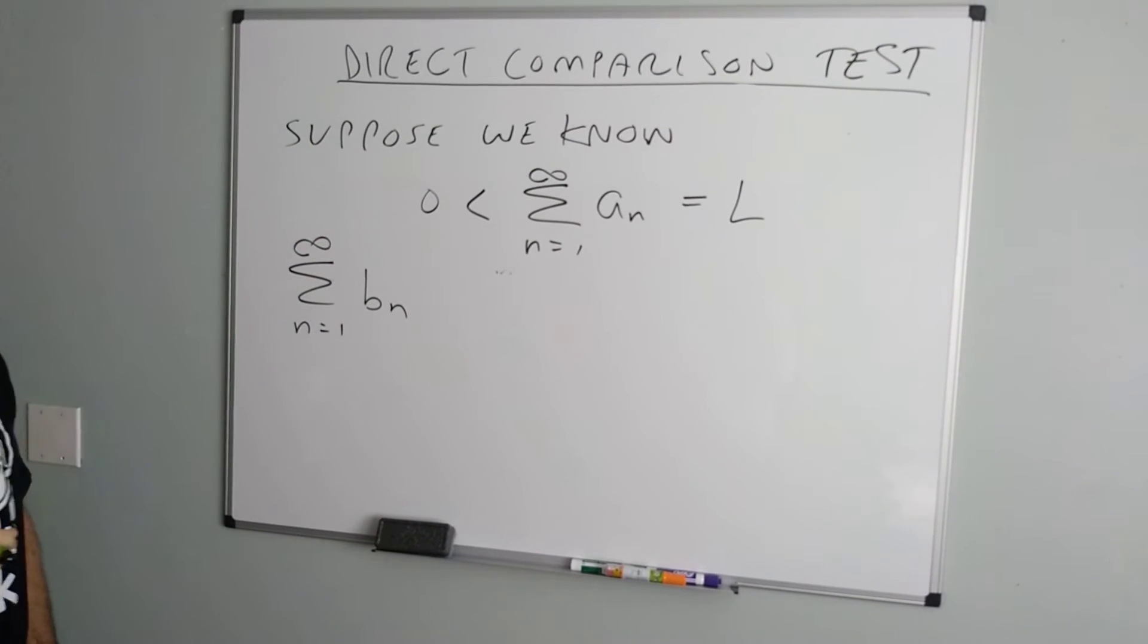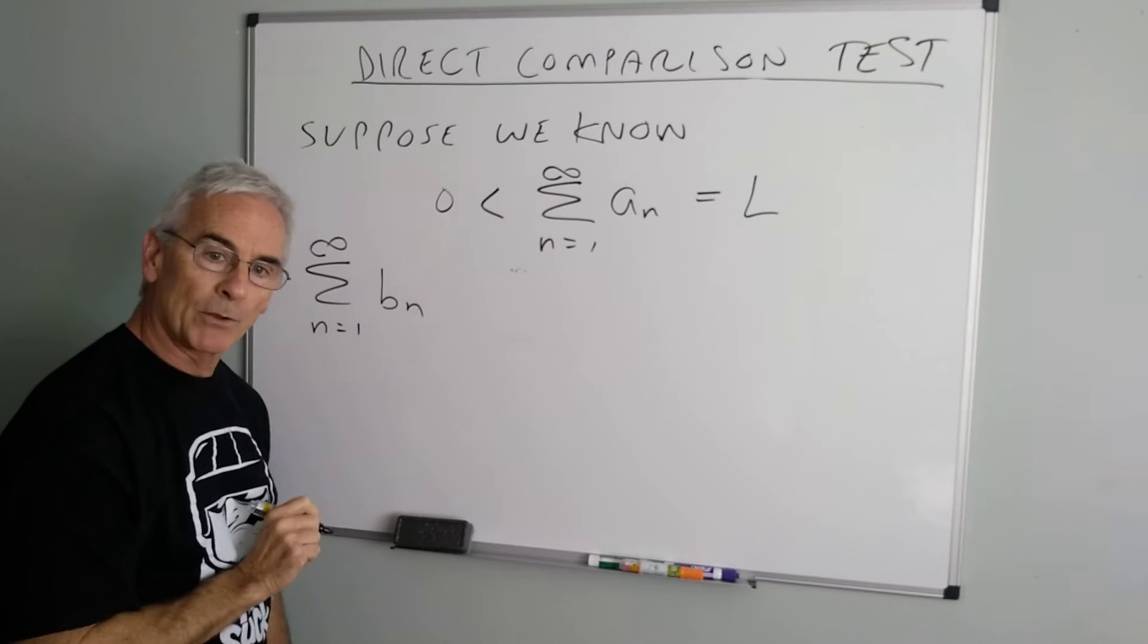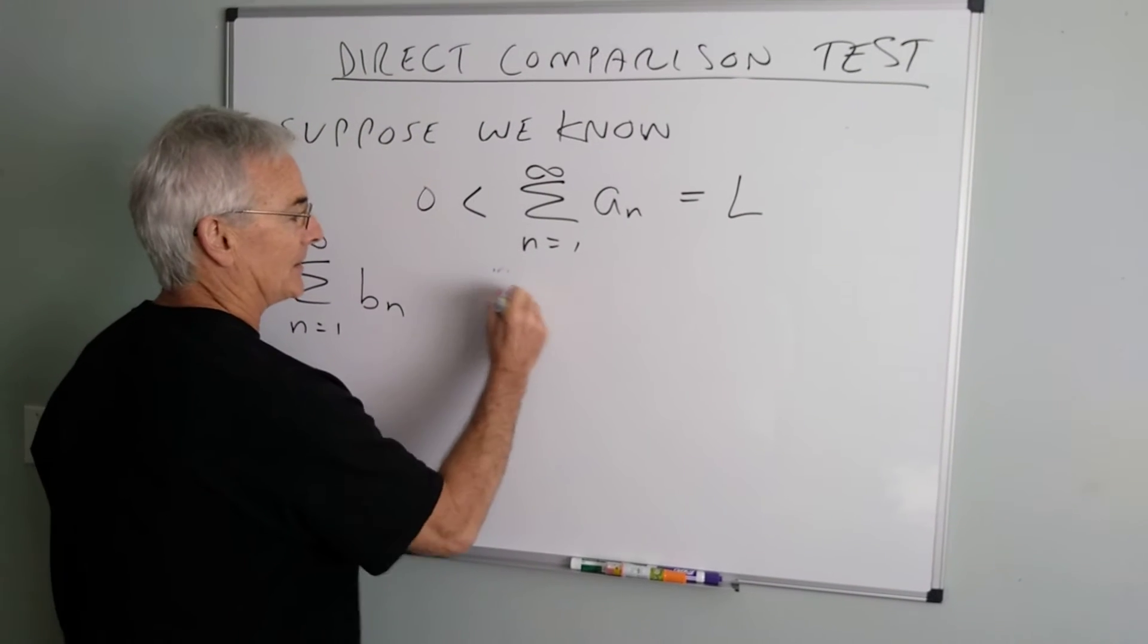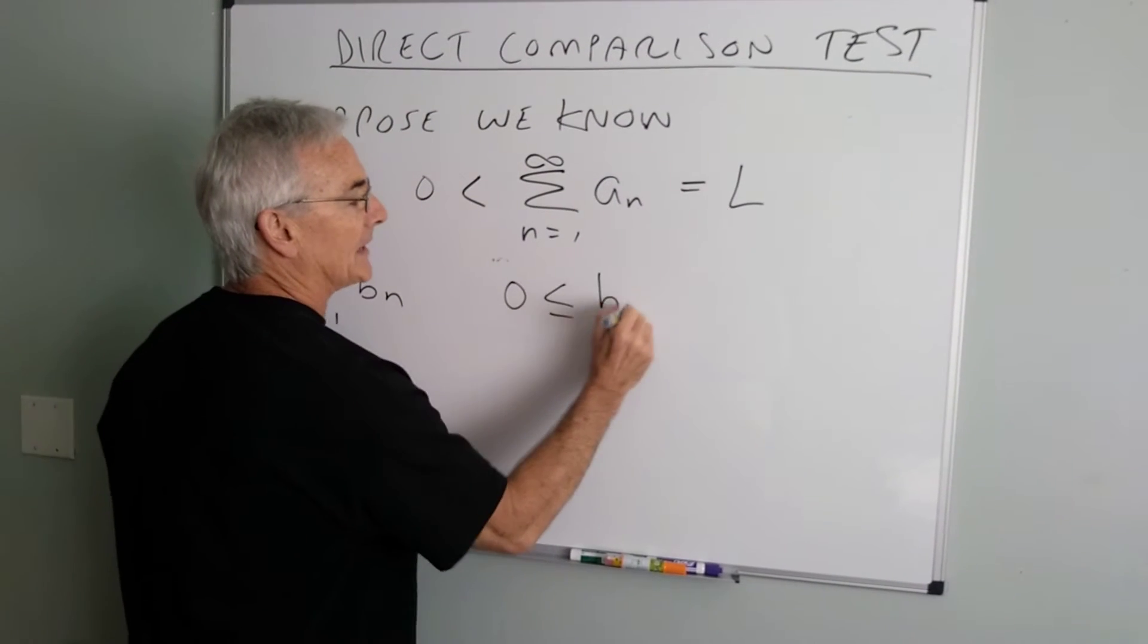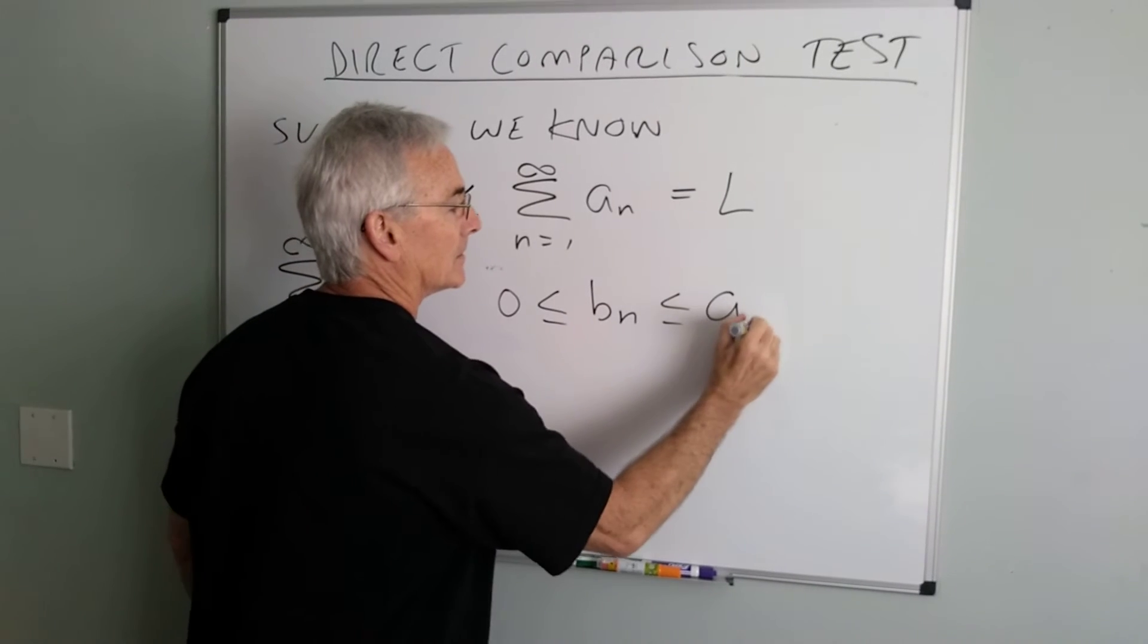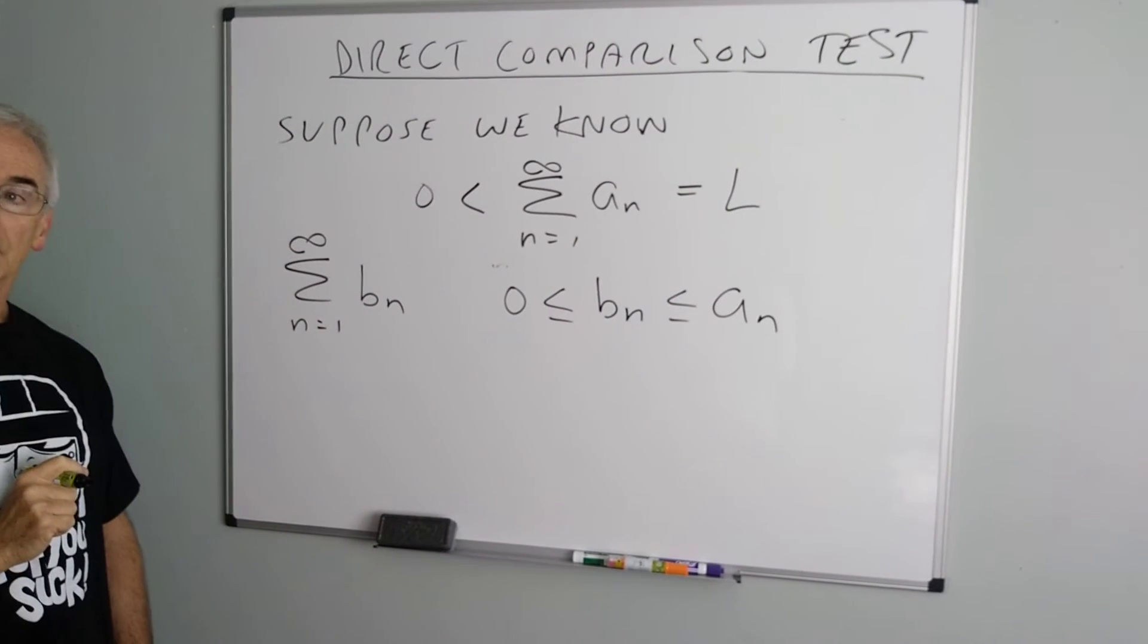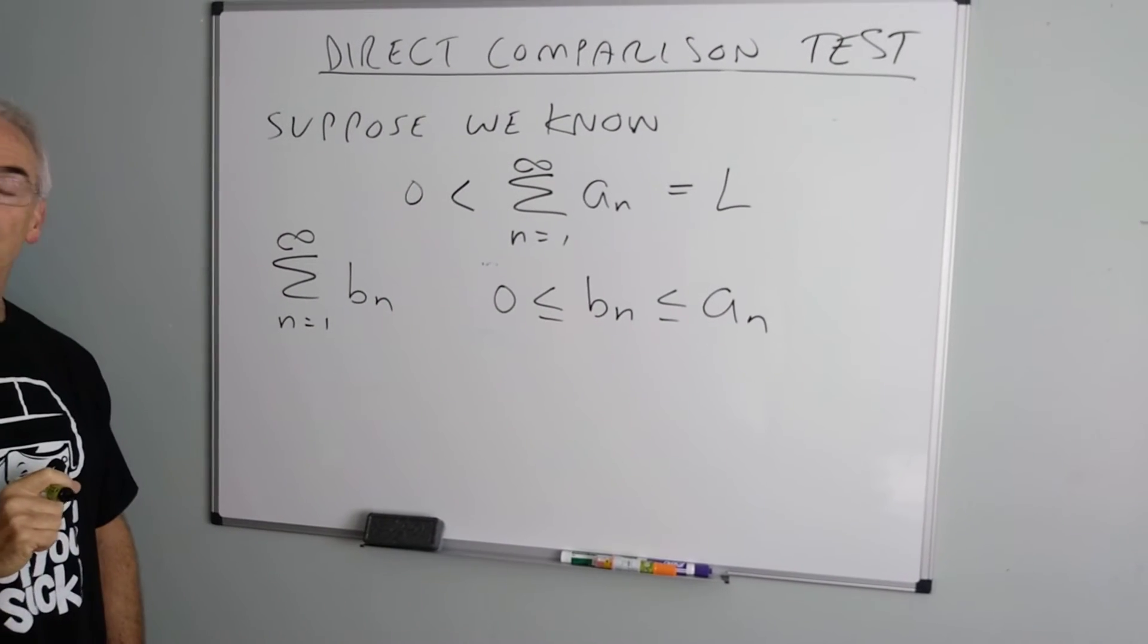And I know that term by term all of my BNs are smaller than the ANs, but all the BNs are non-negative. So term by term they're smaller but still positive.